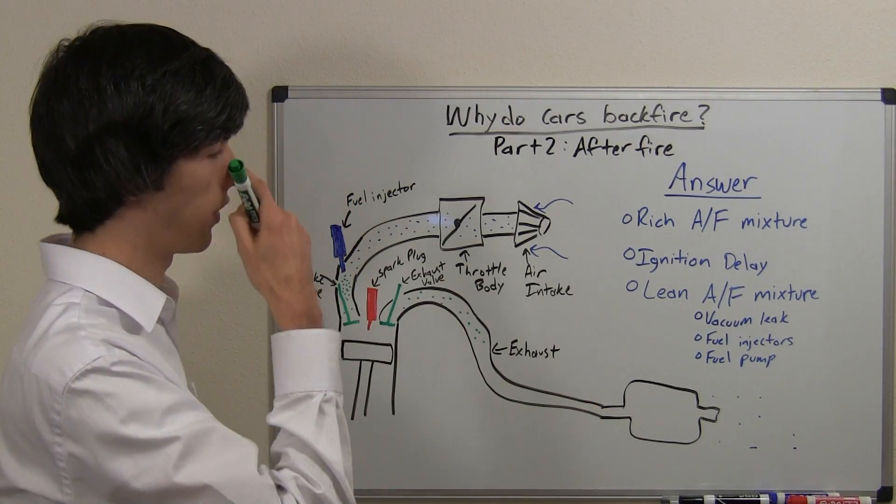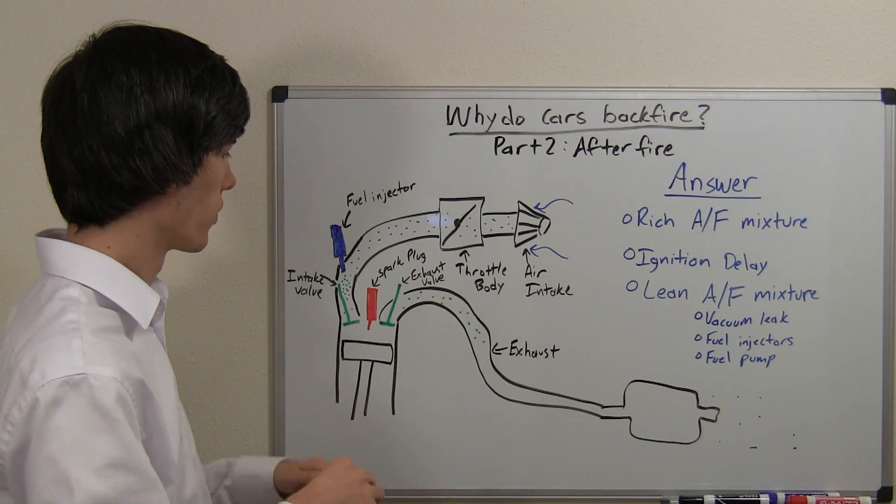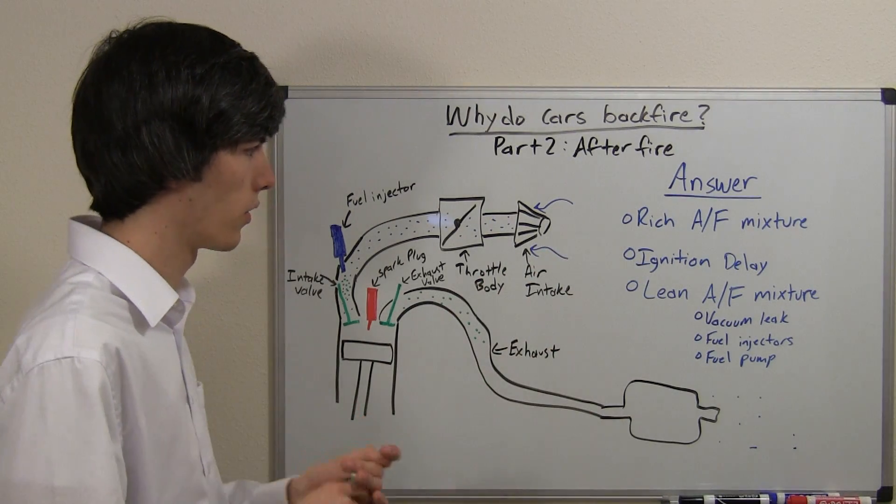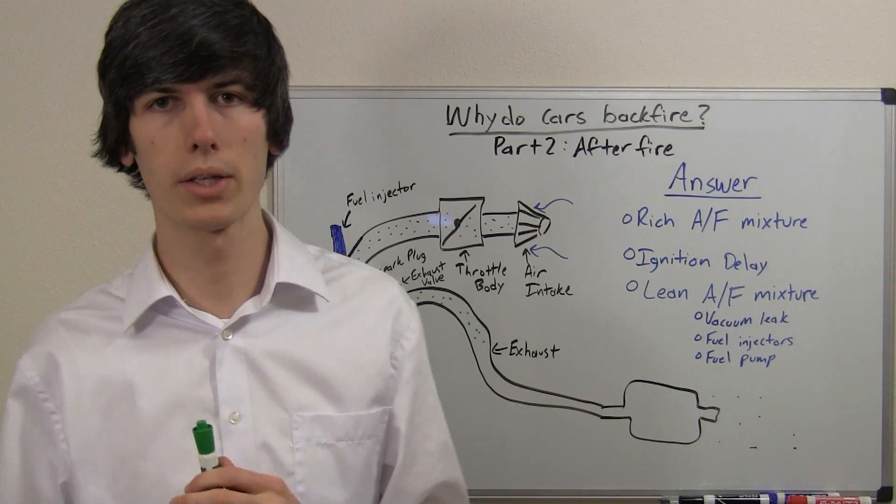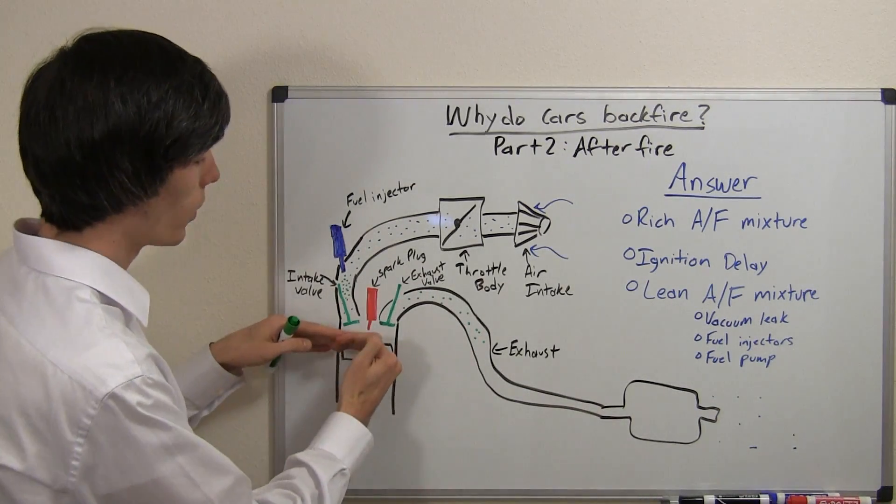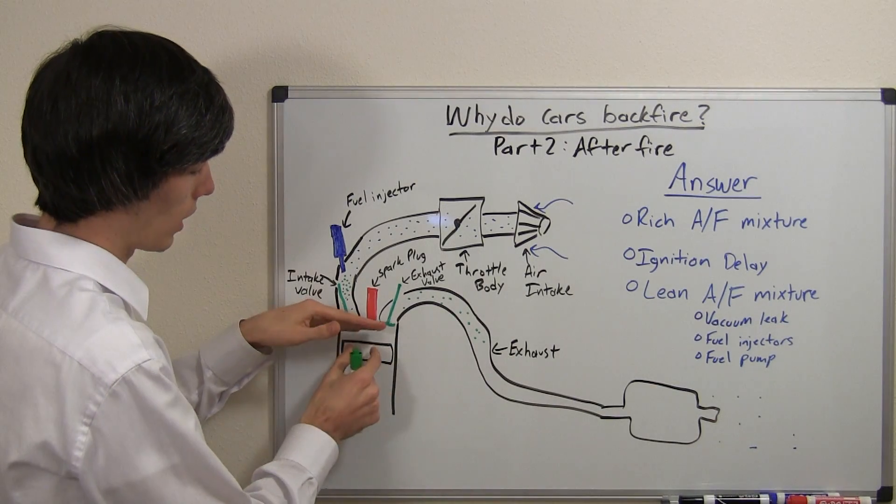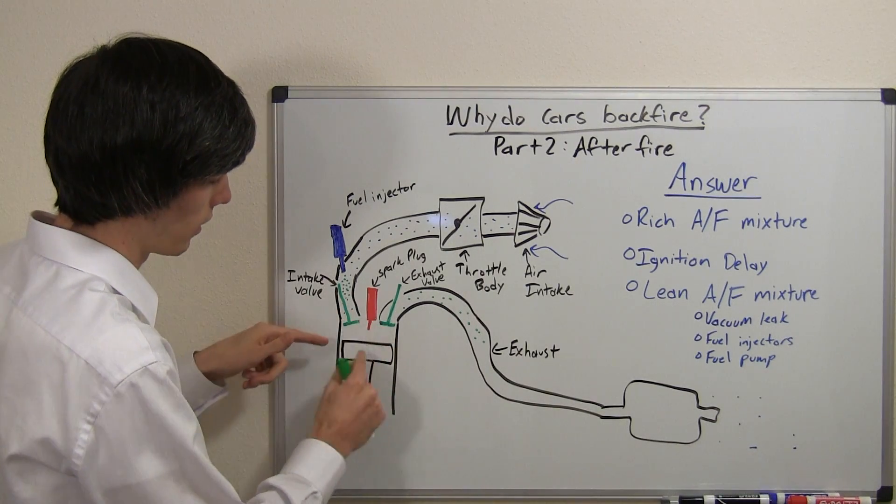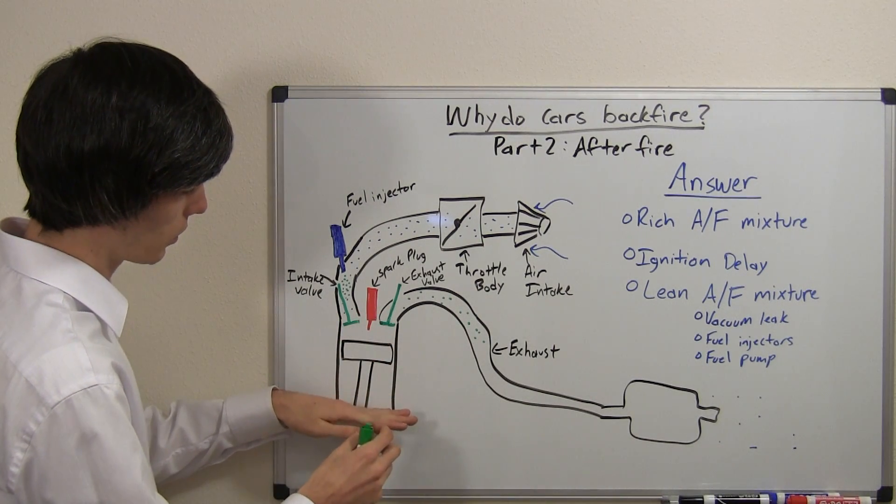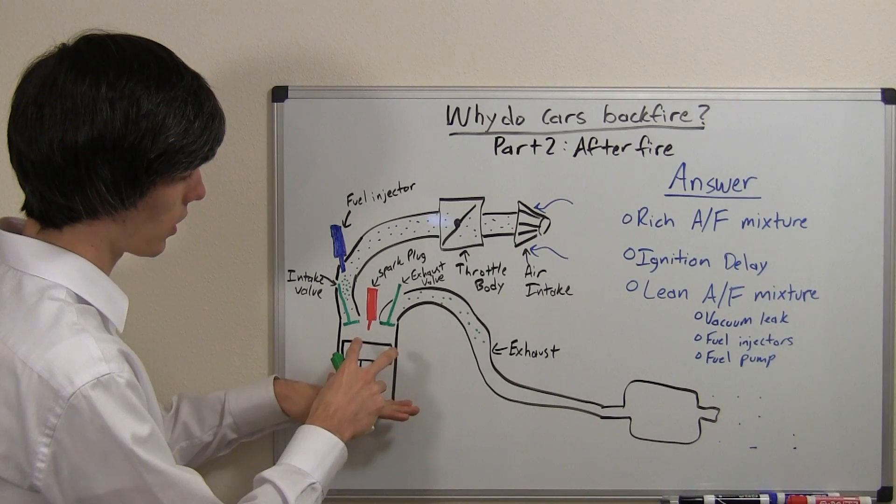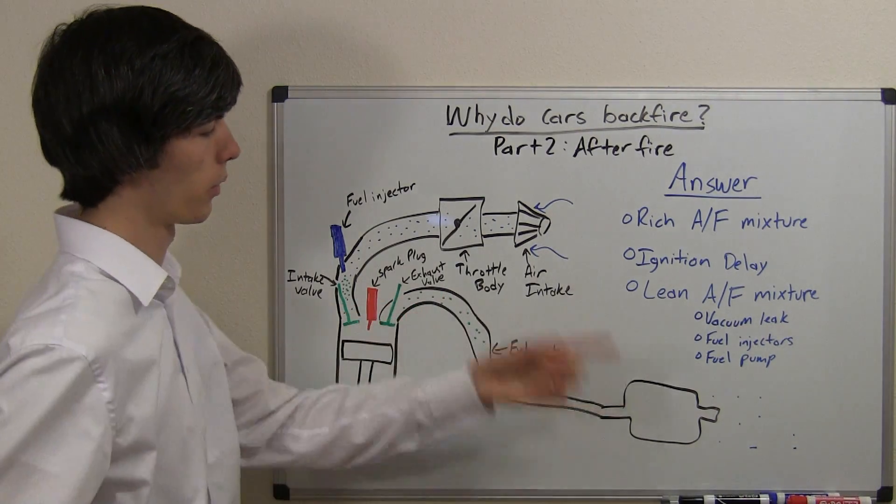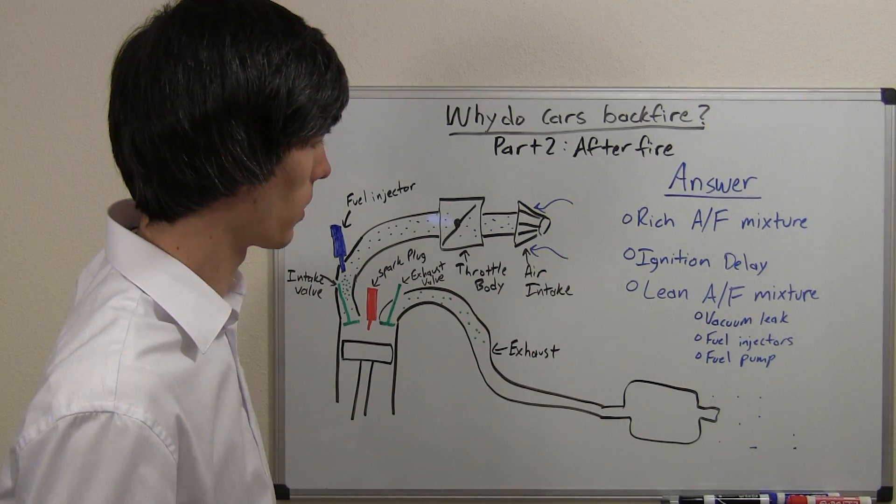The other thing that could cause this is a lean air fuel mixture. So lean air fuel mixture, okay now I've said rich causes it, how could a lean air fuel mixture cause it? Well a lean air fuel mixture burns more slowly than a rich air fuel mixture. So once you have ignition, once you light that spark and ignite this mixture in here, you're going to have that power stroke where this mixture is combusting and it's going to continue to occur even until your exhaust valve opens up and then it will keep occurring through the exhaust and you could spit a little fire out the back.